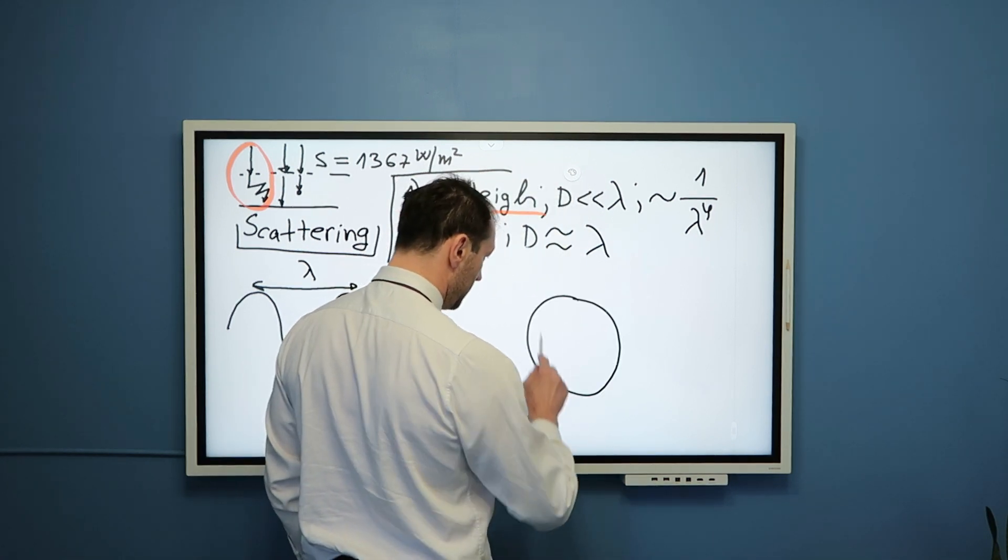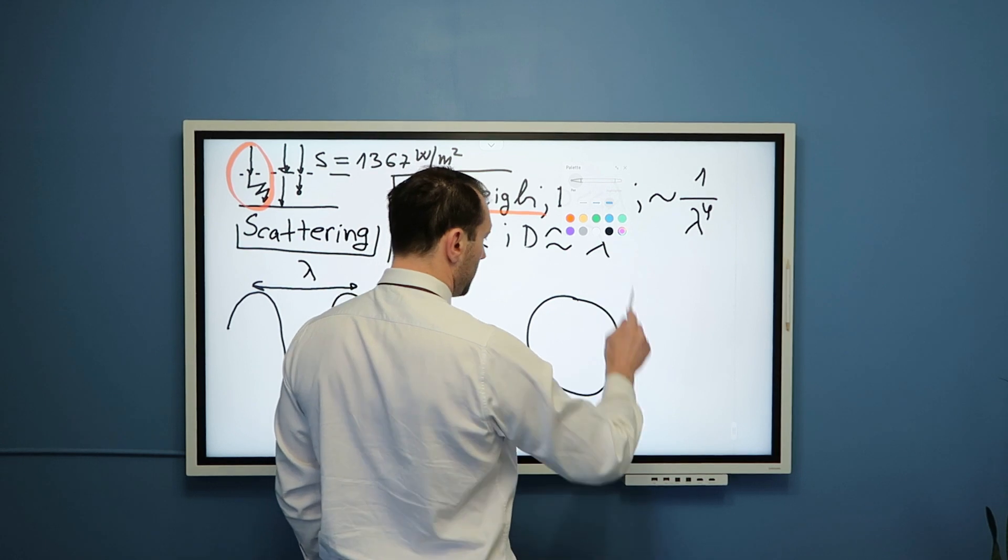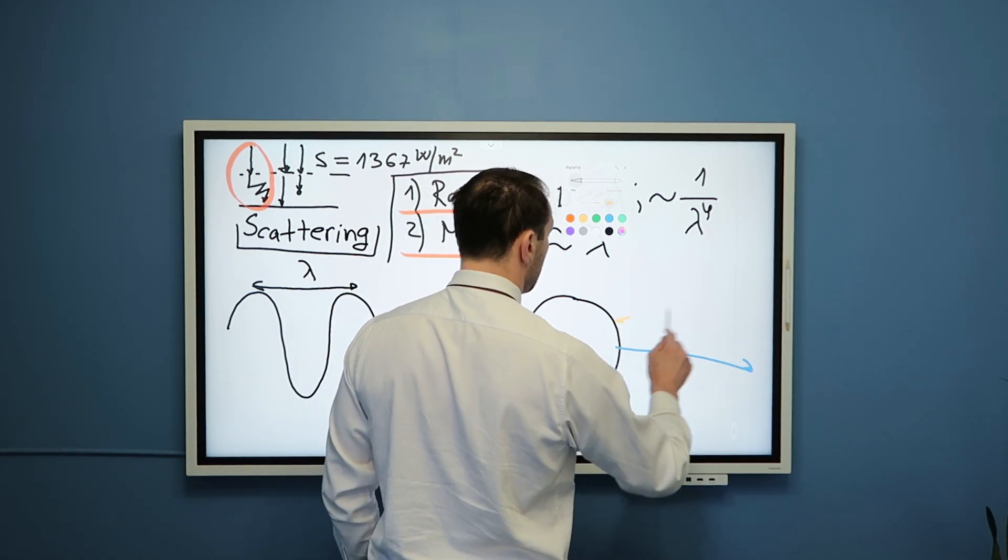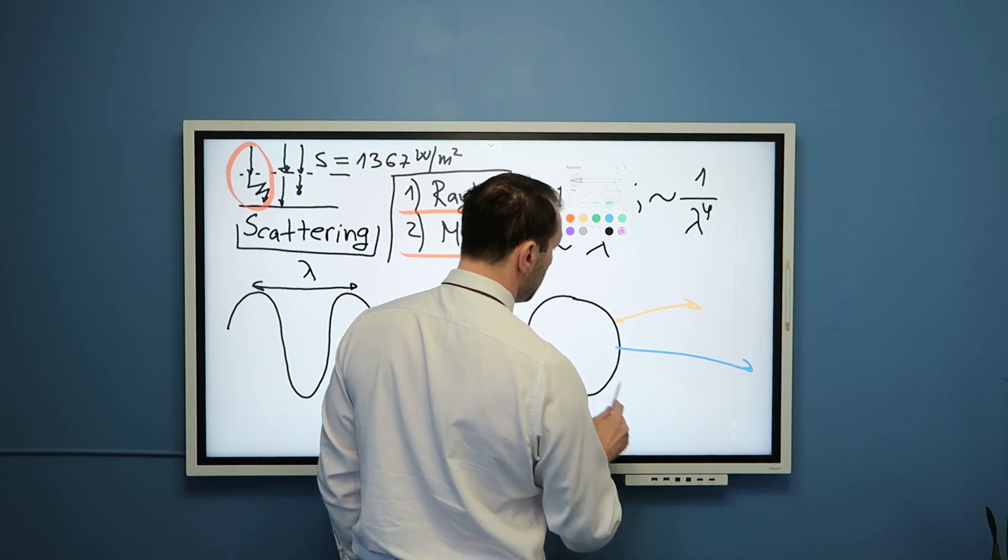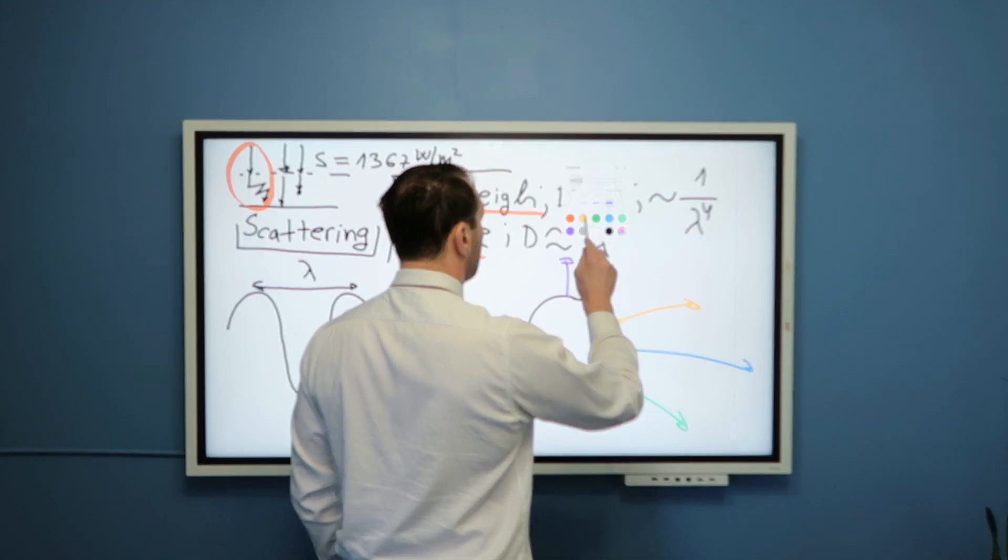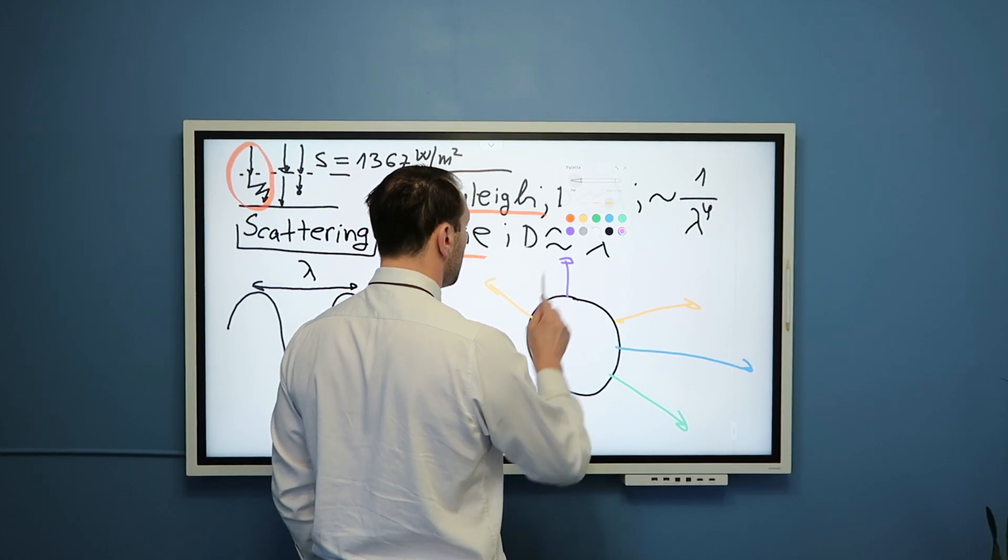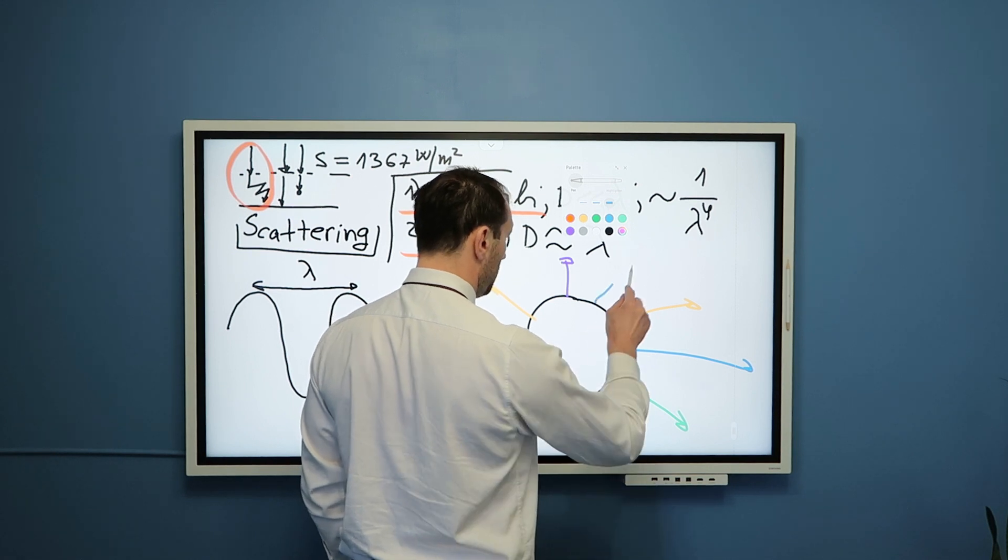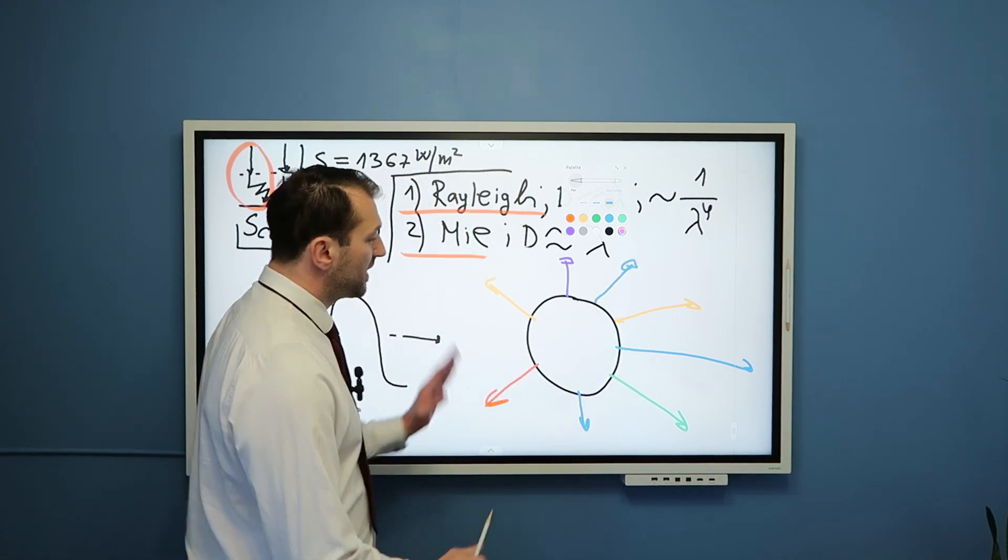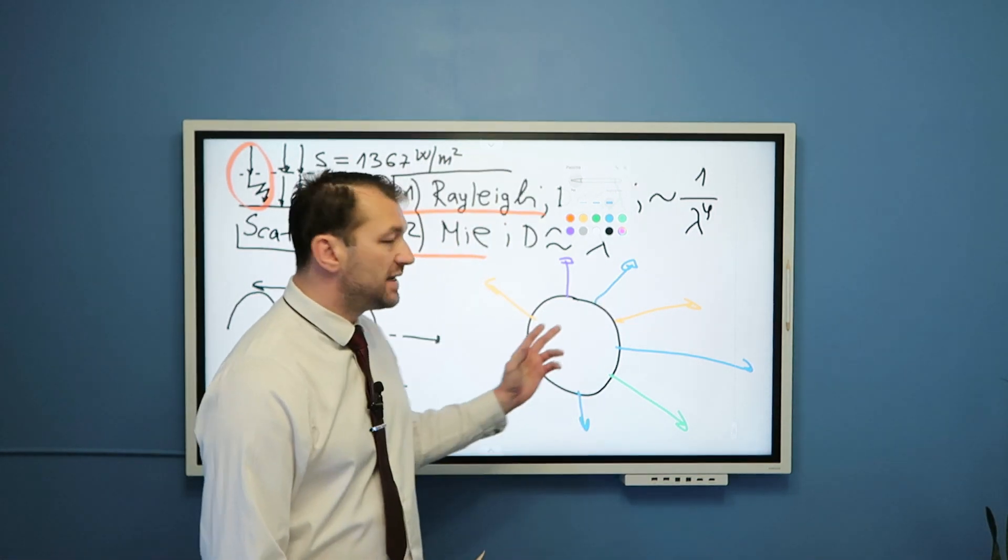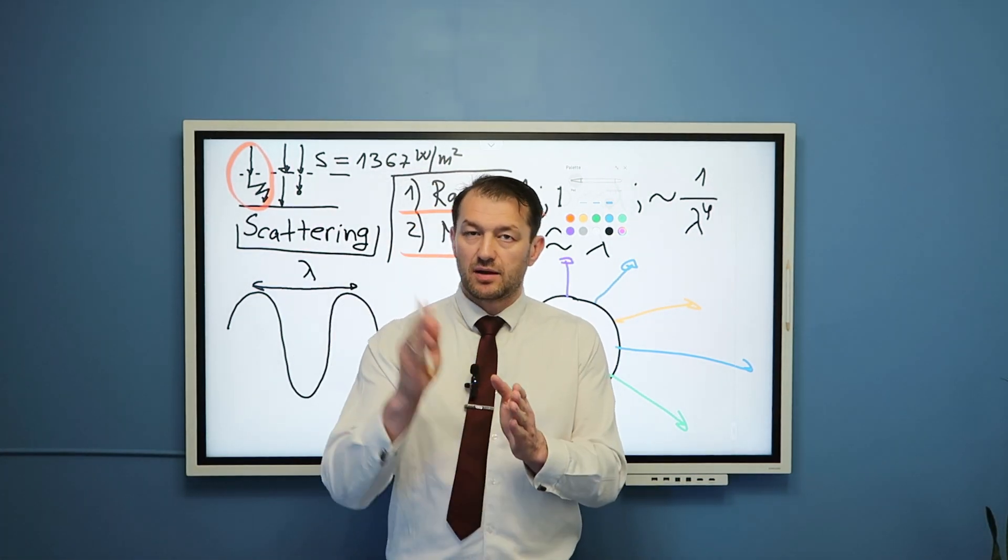So, if here is this particle that is doing scattering, then blue, yellow, green, purple, let's say, more yellow, red, blue, and so on. So, there is no dependency, basically, on the color. And now you also understand why fog, for example, is white.